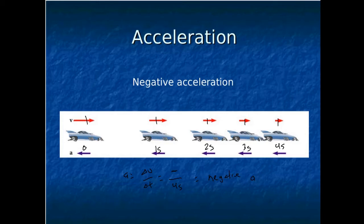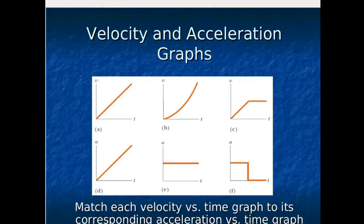An object will slow down whenever the acceleration points in an opposite direction to the velocity. Just like we looked at graphs of position and velocity before, I want to talk about the relationship between acceleration graphs and velocity graphs.